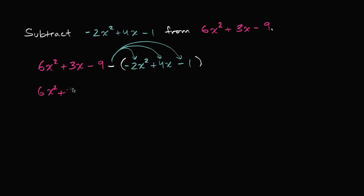6x squared plus 3x minus 9. But then if I distribute the negative sign, the negative of negative 2x squared is positive 2x squared. So that's going to be positive 2x squared. And then the negative of positive 4x is, I'm going to subtract 4x now. And then the negative of negative 1, or the opposite of negative 1, is going to be positive 1. So I've just distributed the negative sign.